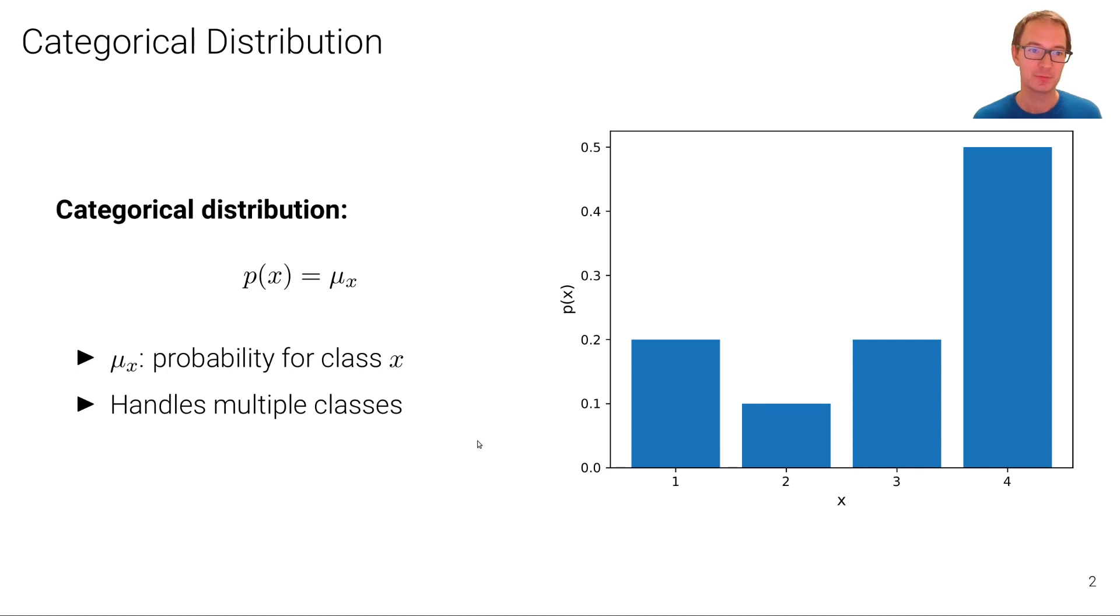An extension of the Bernoulli distribution to multiple classes is the categorical distribution, where we have the probability for a particular class x equals mu x. And we must ensure that these mu's sum to 1. So here's an example of four classes: probability 0.2 for class 1, 0.1 for class 2, 0.2 for class 3, and 0.5 for class 4. If we sum all of them together we get 1.